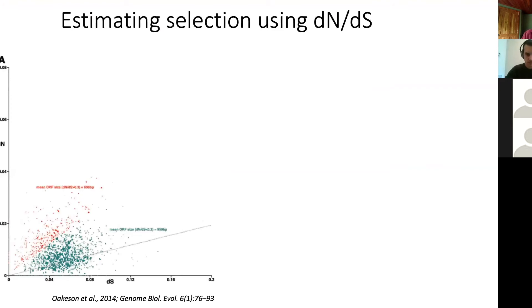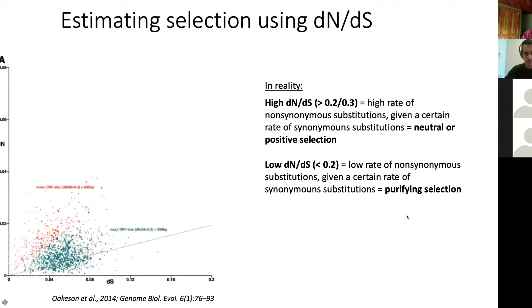In reality, however, DN/DS rarely approaches 1. On average, it actually hovers around 0.1 or 0.2. Values elevated above 0.3 or 0.4 already indicate neutral or positive selection. I took this figure from a paper I really like, where they were looking at endosymbiotic bacteria evolving inside of, I think, the stink bug. This is a very young endosymbiont, meaning it has been evolving within the host for a relatively short amount of time.